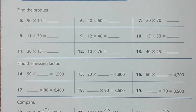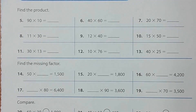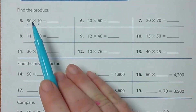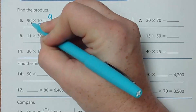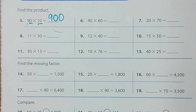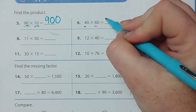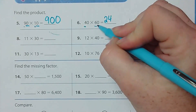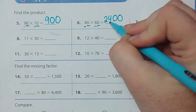Number 5 on page 145: 90 times 10. Nine times 1 is 9, and there are two zeros in those numbers, so I add two zeros — the answer is 900. Number 6: 4 times 6 is 24, and I'm adding two zeros, so the answer is 2400.